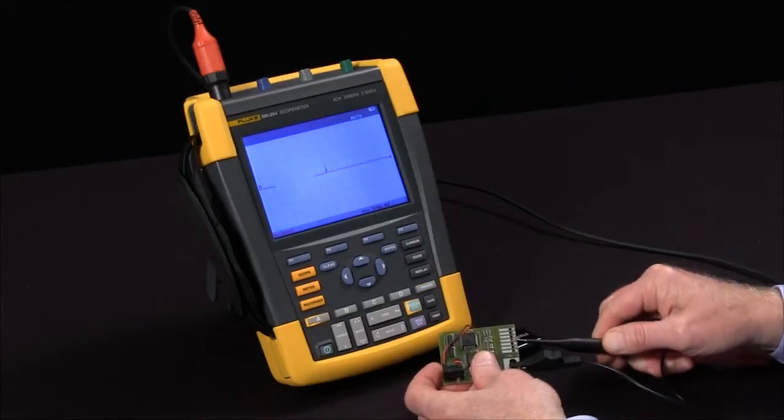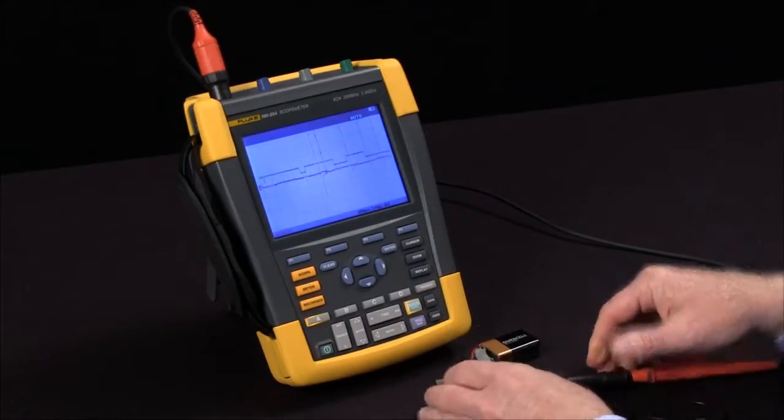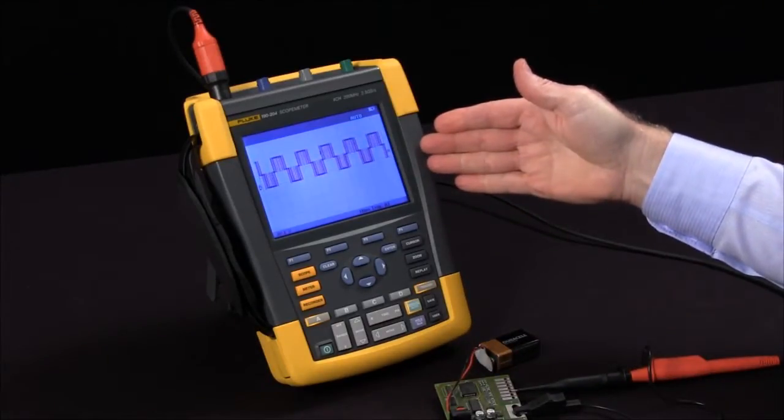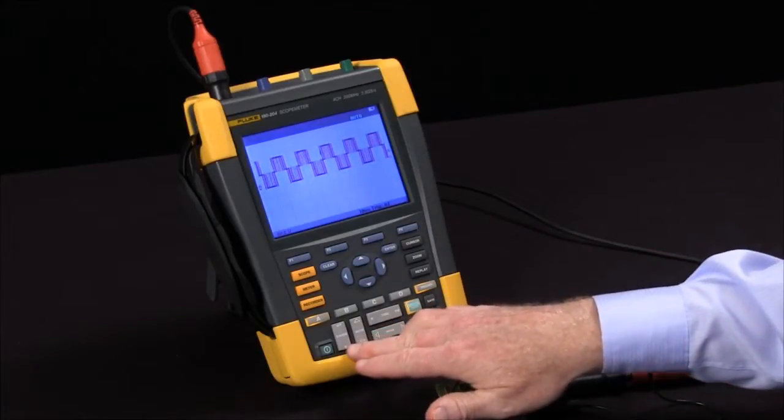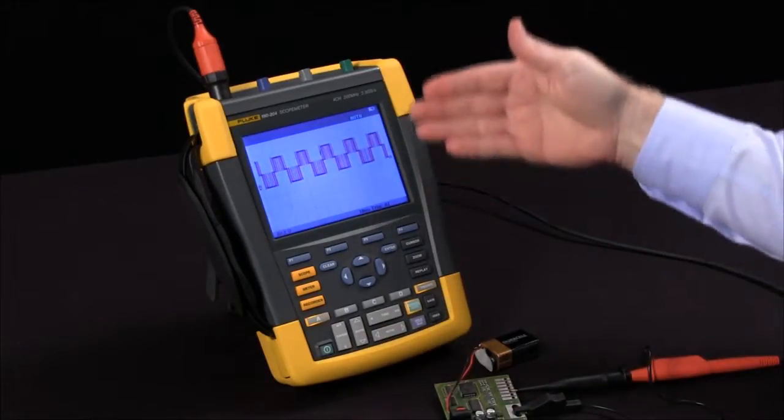Normally, when I connect my scope to a signal, it sets itself up automatically with the proper time base, attenuator and trigger to give me a stable display.